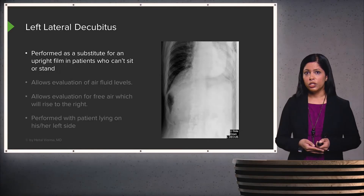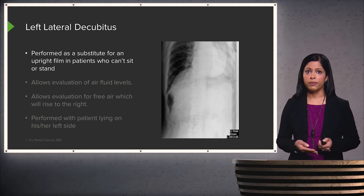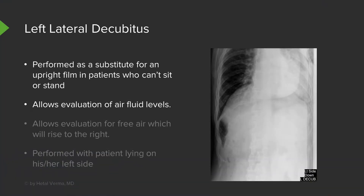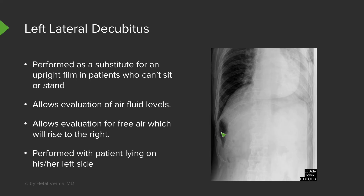A left lateral decubitus is usually used in patients who aren't able to stand upright, serving as a substitute for an upright film. It allows evaluation of air-fluid levels and free air. The patient lies on their left side down with the right side up, and air rises to the top part of the body, visible adjacent to the liver on the right. Ideally it's performed left-side-down because the liver forms a solid organ on the right, allowing you to distinguish air from the liver's density — the other way around, bowel on the left makes it hard to differentiate intraluminal from extraluminal air.